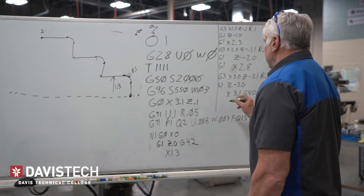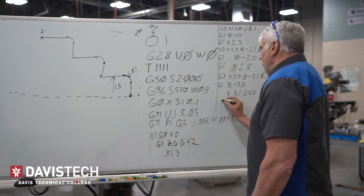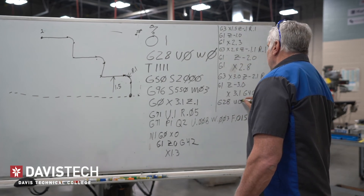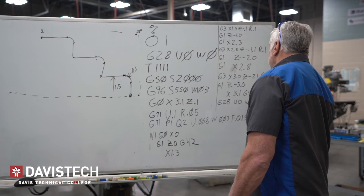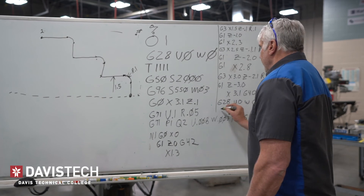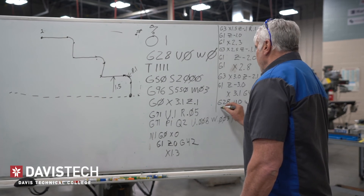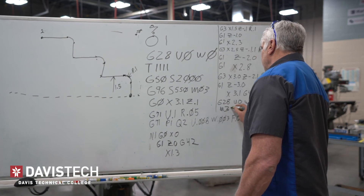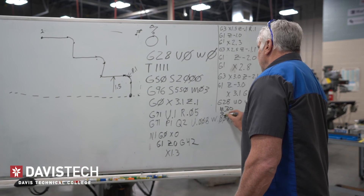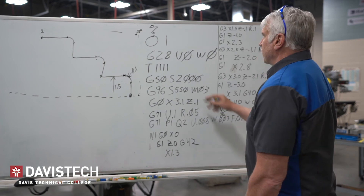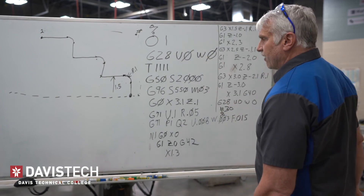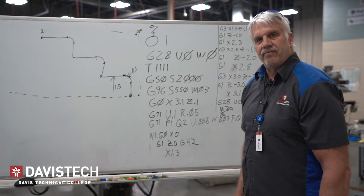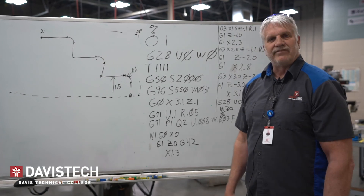Then I'm going to send everything home, which is a G28 U0 W0, and then end of the program M30. The percent symbol sends it back to the beginning. That will run our whole program. There you go.